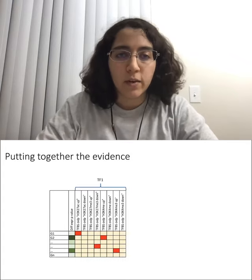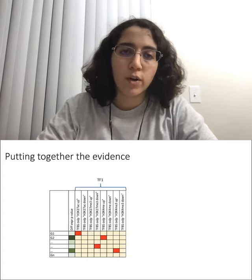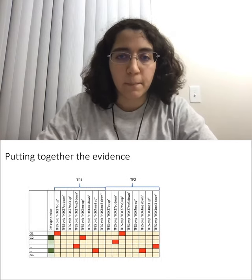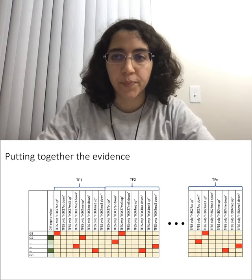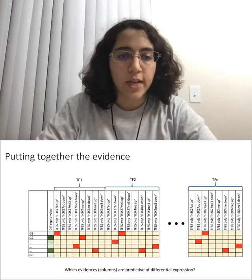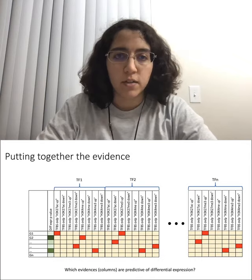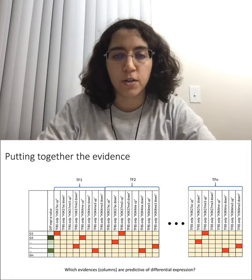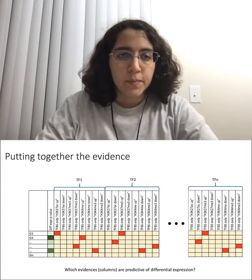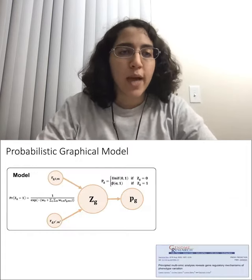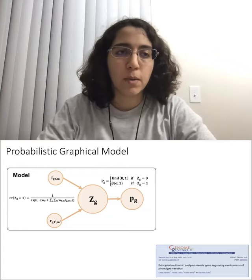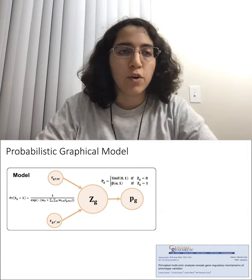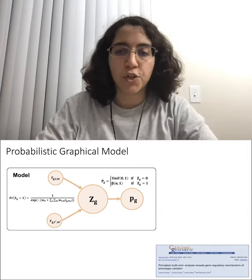We can have regulatory information not only for one TF but for multiple TFs. The question we would like to answer is which evidences or columns in this matrix are more predictive of differential expression. To answer this question, we use a model largely built on previous work from my former lab mate published in Genome Research.